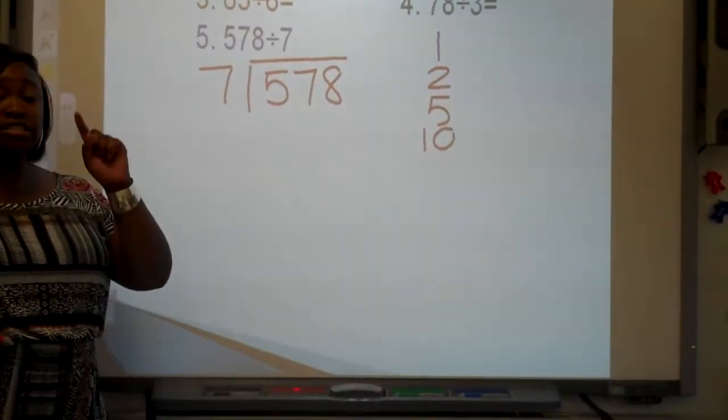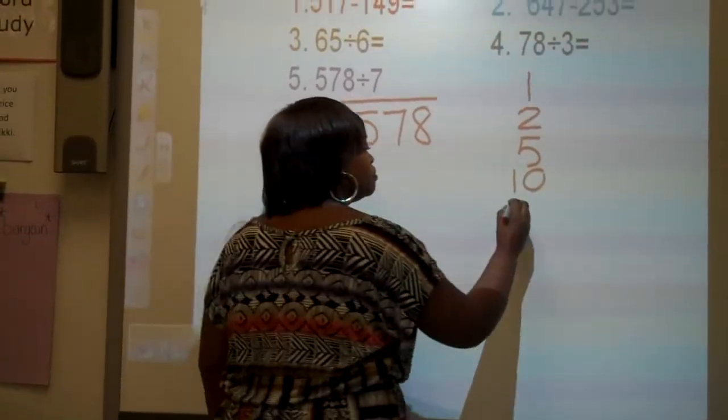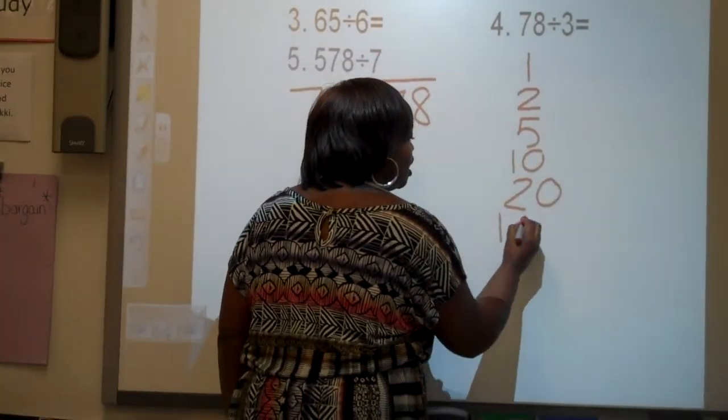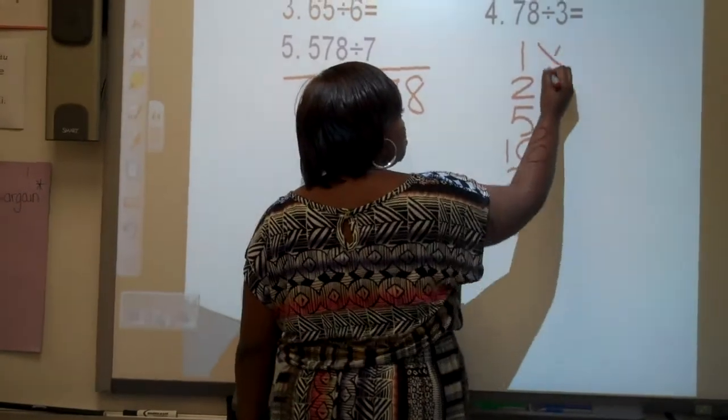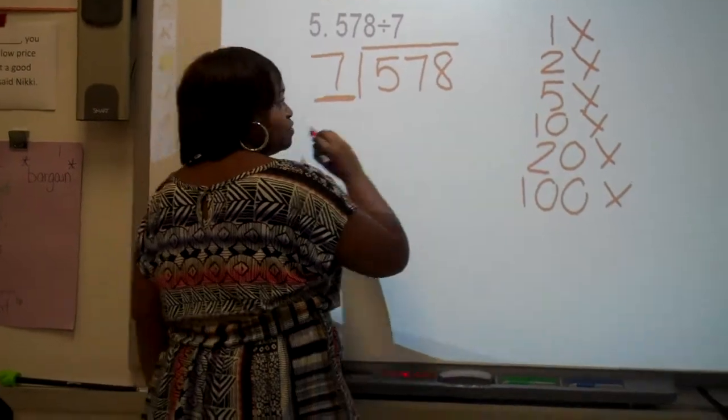20! Wait a minute, since this is a bigger number, I'm going to add my extra tricks, which is what? 20 and 500. 100. And I multiply all of these by 7, because it's my divisor. Very good.